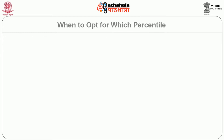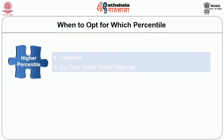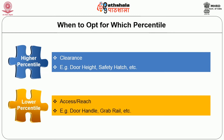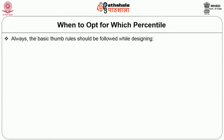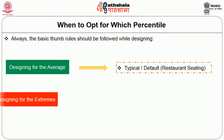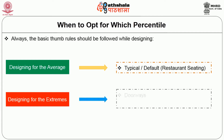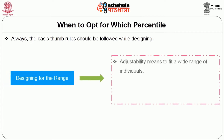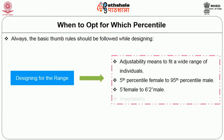When should you opt for certain percentiles? When designing elements like door height or safety hatches, use higher percentiles. When designing for access or reach for everyone — such as door handles and grab rails — use lower percentiles. The basic thumb rules for designing are: designing for the average, designing for the extremes, and designing for the range. If you give importance to these three guidelines, you can work on any design.